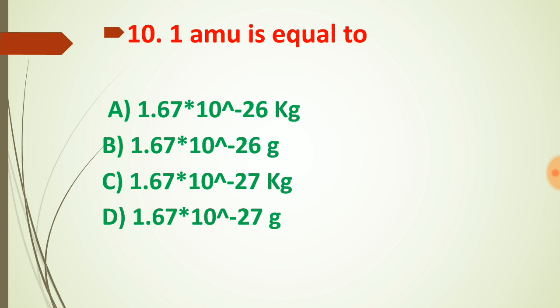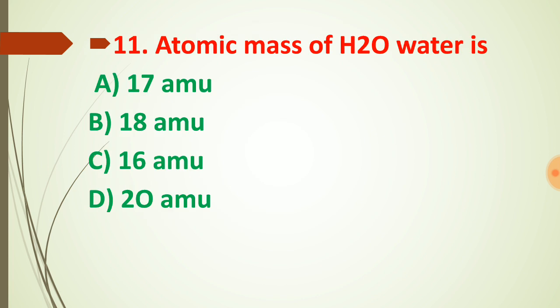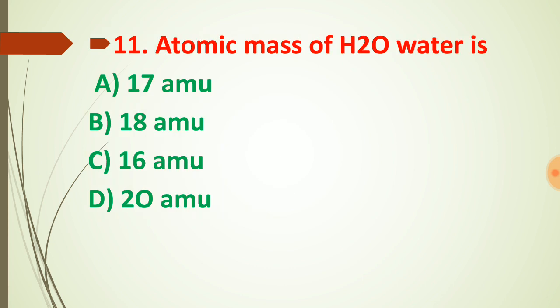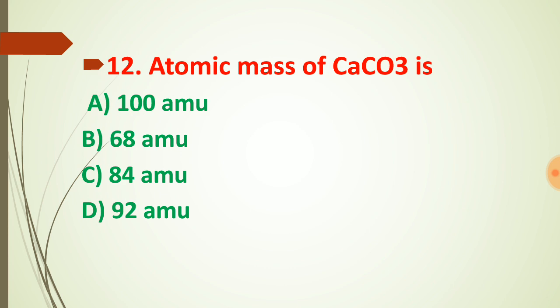Question number eleven: atomic mass of H₂O. H₂O contains two hydrogen atoms and one oxygen atom. The mass of hydrogen is 1, and since there are two hydrogen atoms, their combined mass is 2. Oxygen has a mass of 16. Adding 2 and 16 gives 18 AMU, or equivalently 18 × 1.67 × 10⁻²⁷ kg.